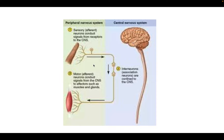We also have what we call interneurons. Those sometimes are connecting from the central nervous system to the peripheral or the motor neurons. Or sometimes they just make a complete loop so certain information doesn't even need to go all the way to the brain. Those interneurons are able to process it in the spinal cord and create an effect sooner.